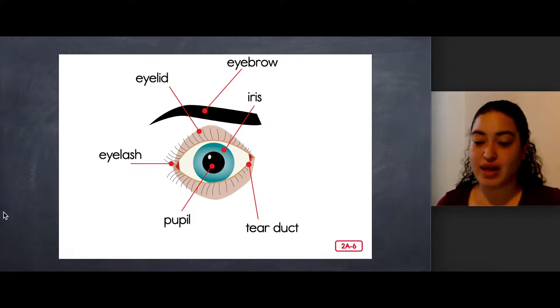So before we move on, let me just point to some of these. So this right here is your eyebrow. This here is your eyelid. It's what covers your eye on the top. These are eyelashes, the little hairs. This right here is a tear duct. That's where your tears come out of. The colorful part of your eye is called the iris. And the black hole in the middle is called the pupil.